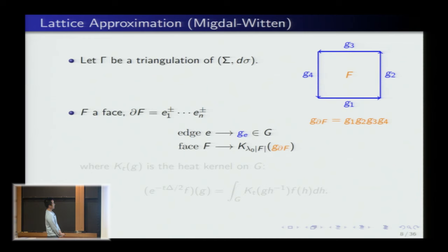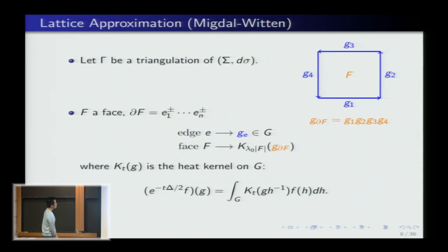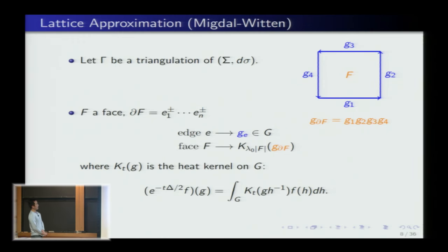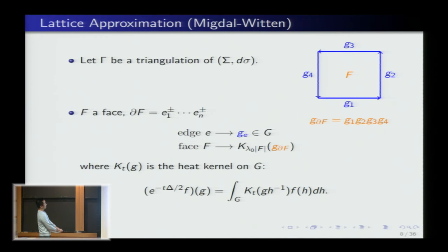We feed that boundary element into a heat kernel at a certain time. The time is the coupling constant λ₀ times the area of the face. The heat kernel is the convolution kernel of the heat operator on the group G — the group G has an ad-invariant (bi-invariant) metric, which defines a Laplace-Beltrami operator. The heat semigroup that this generates gives us this density; dh is Haar measure. So for each face, you feed in the group-valued boundary element and weight by the area.